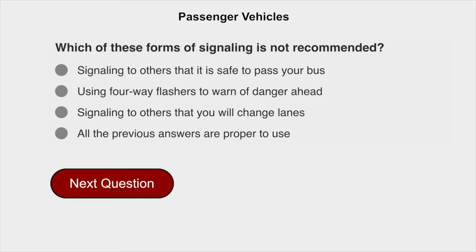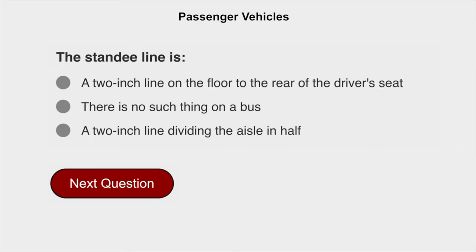Which of these forms of signaling is not recommended? Signaling to others that it is safe to pass your bus. The standee line is a two-inch line on the floor to the rear of the driver's seat.